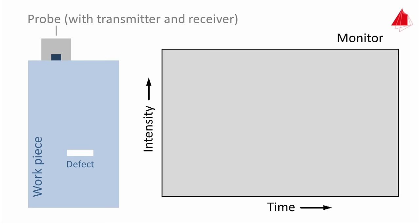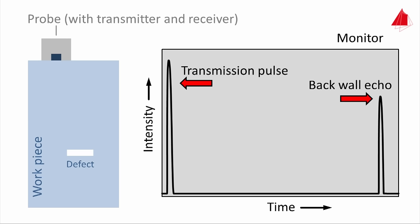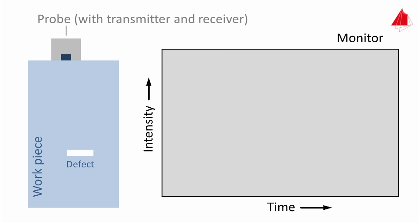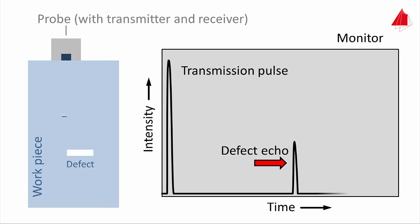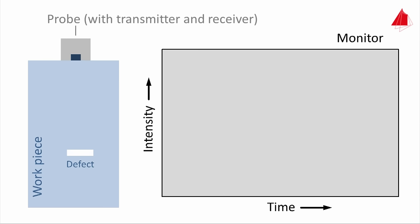With a probe at a place free from defects, only two signals may be seen on the monitor: the transmission pulse and the echo resulting from the lower surface of the workpiece, termed the back wall echo. Moving the probe towards the right leads to an additional echo created by the defect. Even further towards the right, only the defect echo is visible apart from the transmission pulse.